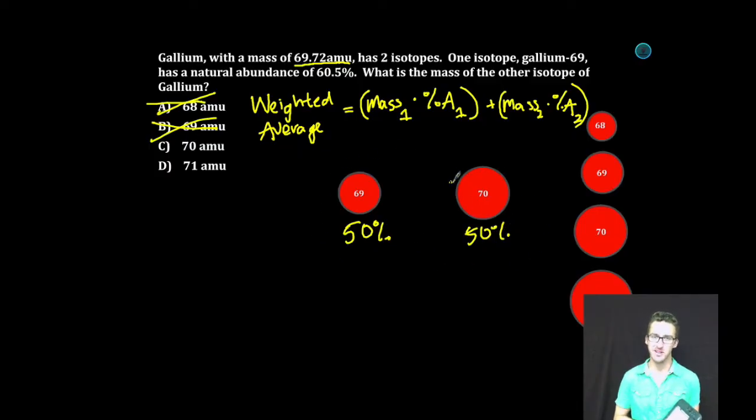Now, answer C looks tempting because our weighted average is 69.72, which would be really close to 69.5. But gallium-69 is more abundant. It's 60.5% abundant. So although you may not be able to do the math in your head, you should recognize that it's going to fall closer to 69 than it would to 70. Option C is out.